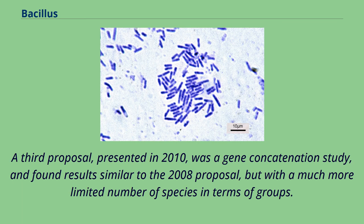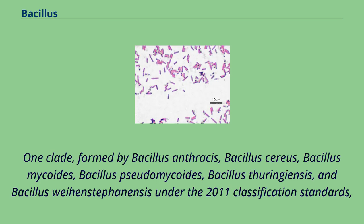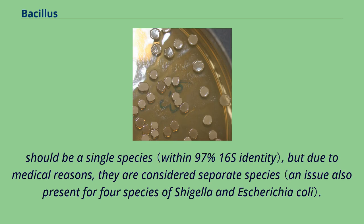A third proposal, presented in 2010, was a gene concatenation study and found results similar to the 2008 proposal, but with a much more limited number of species in terms of groups. One clade, formed by Bacillus anthracis, Bacillus cereus, Bacillus mycoides, Bacillus pseudomycoides, Bacillus thuringiensis, and Bacillus weihenstephanensis, under the 2011 classification standards should be a single species, but due to medical reasons they are considered separate species.